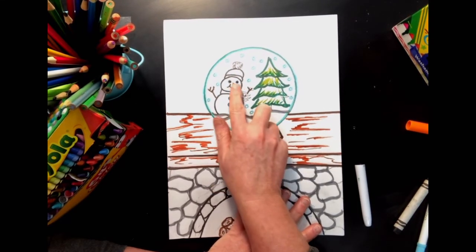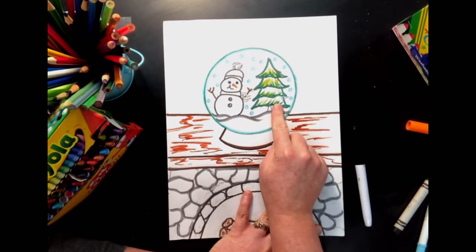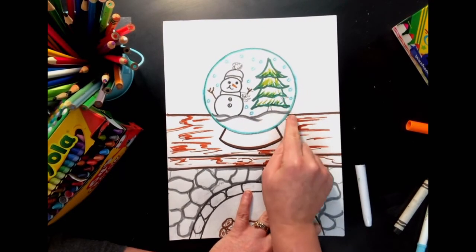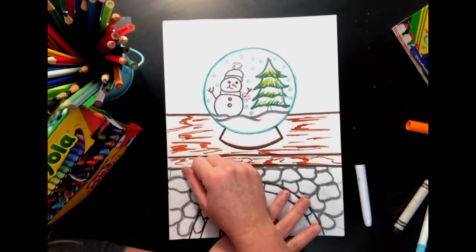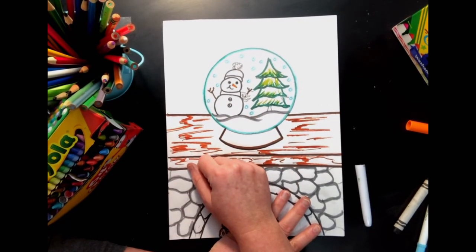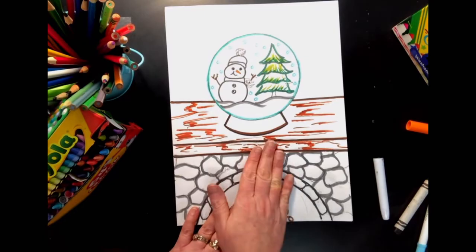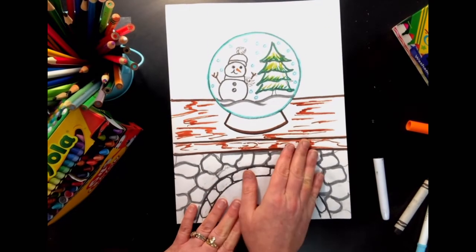And then I outlined my snowman with black so he would show up really nicely as white, and I colored in his little orange nose. Outlined my tree with greens you can tell, and then my snow with gray. If you have a gray marker you can outline your snow with gray. Blue would also work really really nicely too. I'm going to color all these spaces in with crayon in just a minute and you'll see me do that.